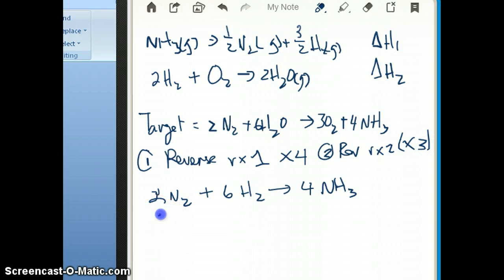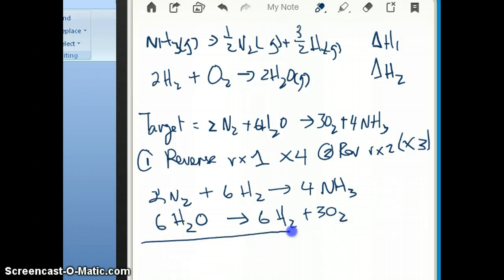So in other words, if I do that, then I'm going to get 6H2O. I multiply this reaction, reverse and multiply by 3, I'm going to get 6H2 and 3O2.